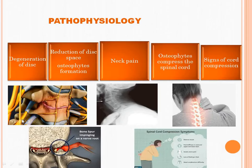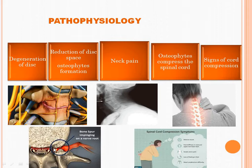Pathophysiology: degeneration of disc. This is the disc-based damage due to aging. It causes osteophyte formation — see here, this is the bone formation that is called an osteophyte. It causes neck pain and the osteophyte compresses the spinal cord.